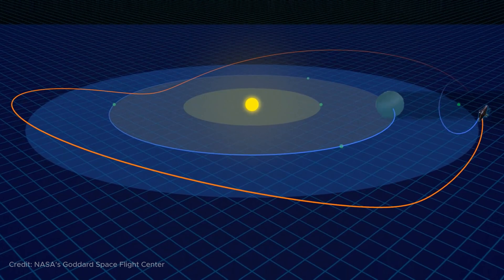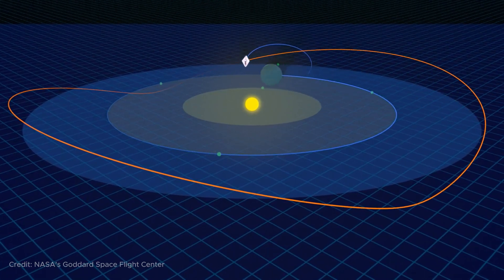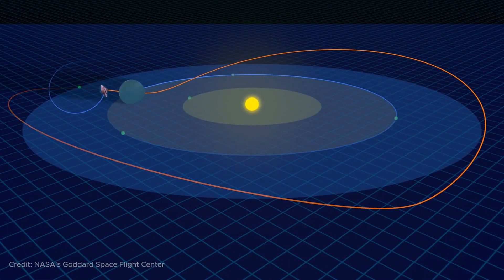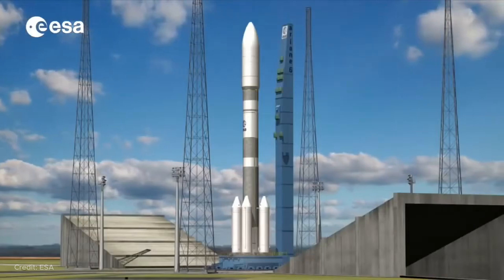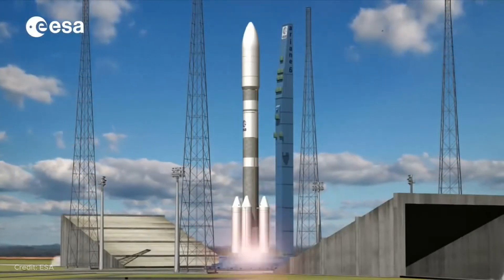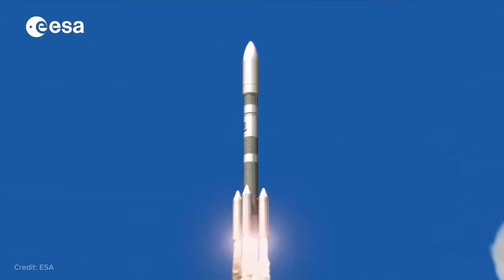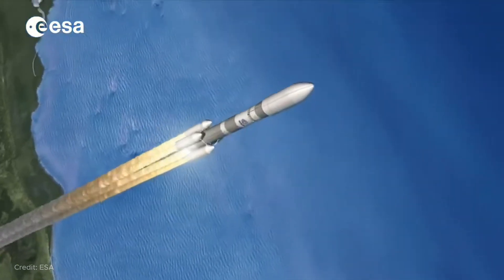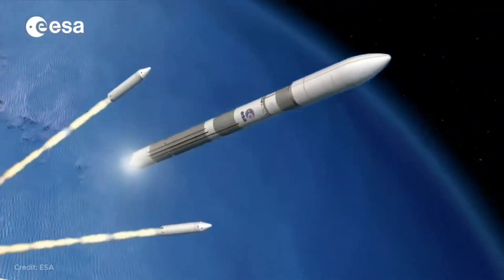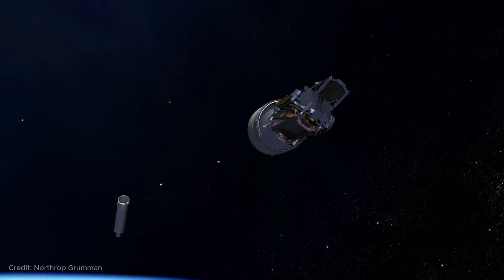Looking at all these complex trajectories and considering that using points L1 and L2 without engines is generally impossible, someone might ask, why do we fly there at all? Why do we overcome so many difficulties? It turned out that for astronautics and space astronomy, points L1 and L2 are very useful.